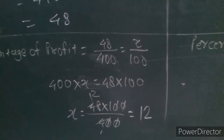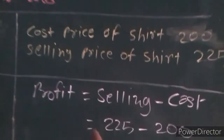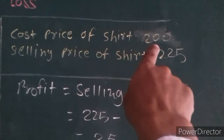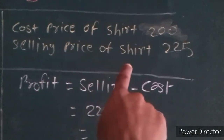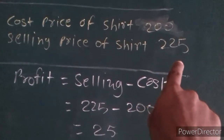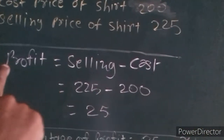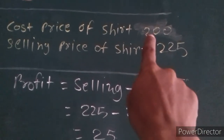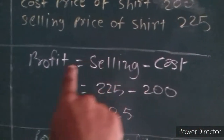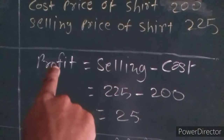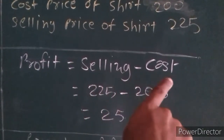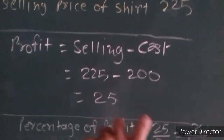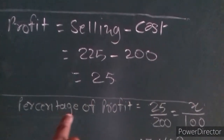Now for the other side: the cost price of a shirt is Rs 200 and the selling price of a shirt is Rs 225. Since the selling price is more than the cost price, we got a profit. Profit equals selling price minus cost price: 225 minus 200 equals Rs 25. Now let's find the percentage of profit.